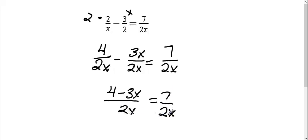Now that we see that the bottoms are equal to each other, I can just take the top and set them equal to each other. 4 minus 3x equals 7 and solve.